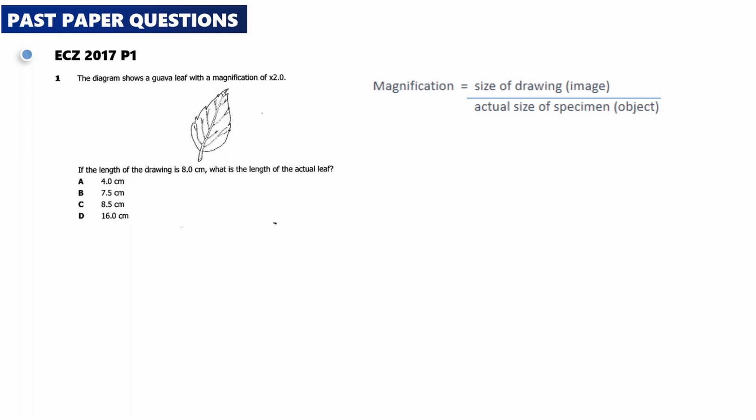This is the formula: Magnification equals size of drawing over actual size of specimen. We've been given the magnification as 2, size of the drawing as 8.0. We're looking for the length of the actual leaf, which is x.